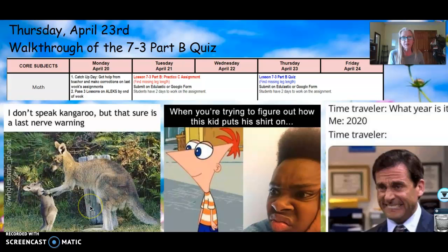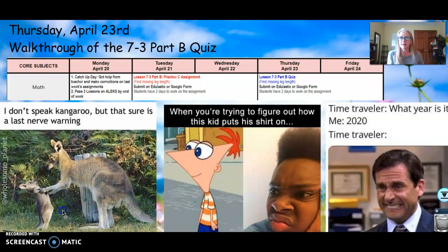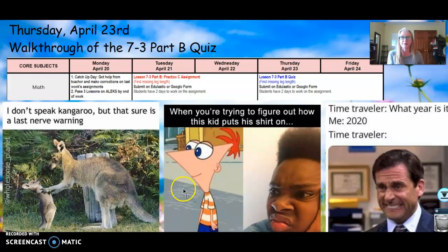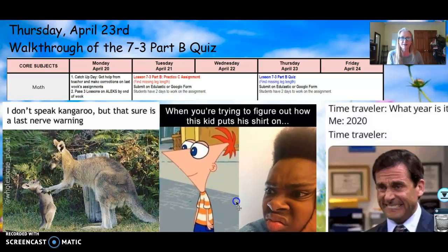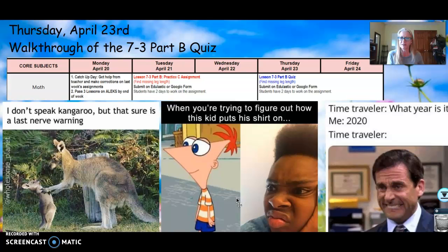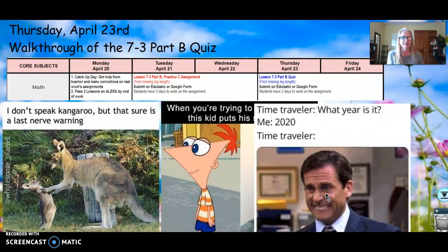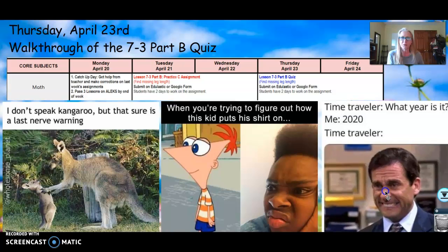But first, Pinterest, right? Okay, well, here's your schedule for today. Like I said, Lesson 3 Part B quiz went live on Edge Elastic this morning, and the problems that I'm going to be showing you are the actual ones that you will be asked to solve. I'm not going to completely solve them for you, but I'll totally help you set them up. For Pinterest, I don't speak kangaroo, but that sure looks like a last nerve warning to me. Yeah, I think Mama Kangaroo has had all she can take there. When you're trying to figure out how this kid puts his shirt on, that's a good question. And time traveler, what year is it? Me, 2020, time traveler. That's not our best year. No. But hopefully it will get better, I hope.